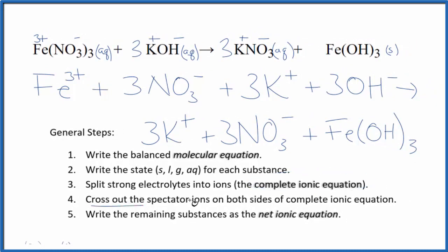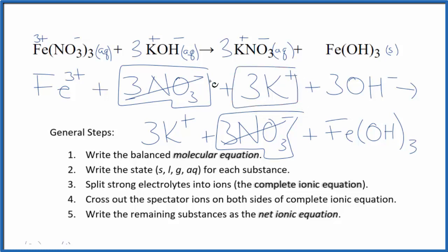Now we can cross out spectator ions. They're on both sides. I can see 3 nitrate ions here and in the products. Get rid of those. 3 potassium ions in the reactants, 3 in the products. We'll get rid of those. And what's left, that's the net ionic equation for Fe(NO3)3 plus KOH.